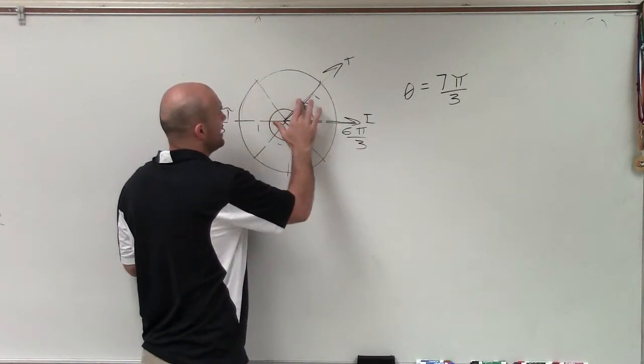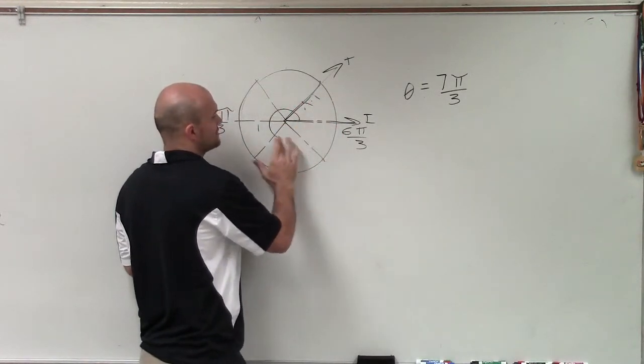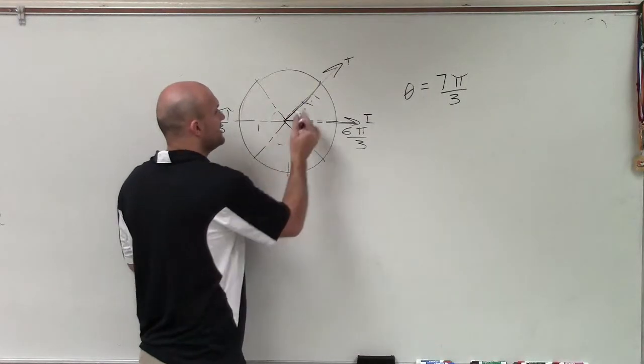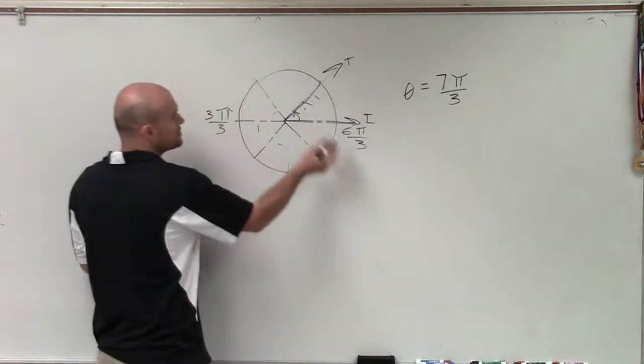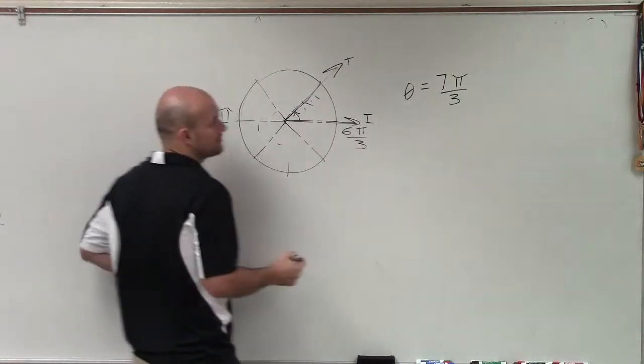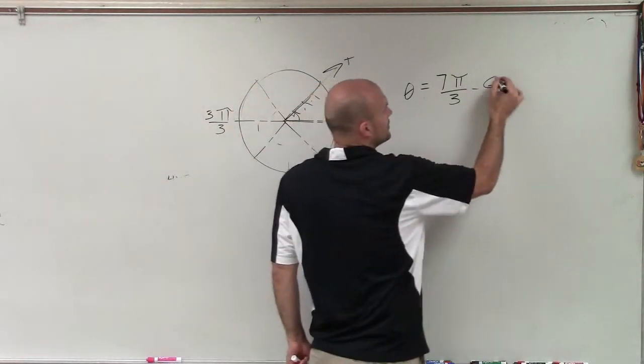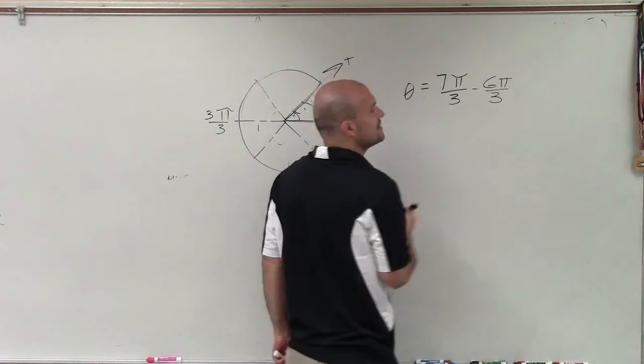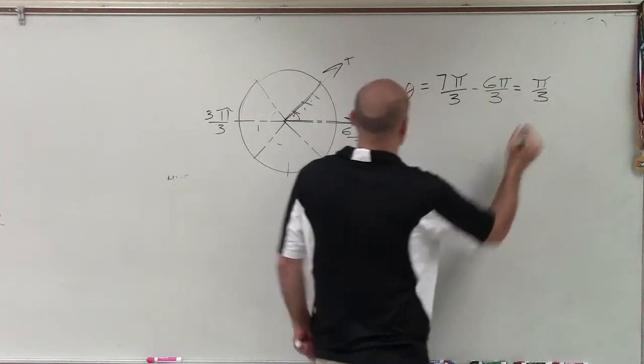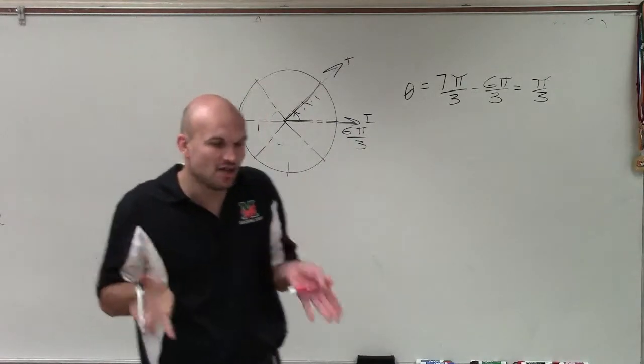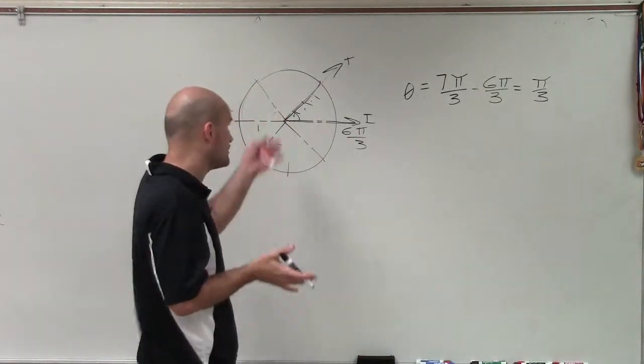Rather than adding 2π, what I'm going to want to do is subtract 2π, and when I subtract 2π, I'm just left with this one angle, which is π/3. Remember, 2π we can represent as 6π/3. So to find the coterminal angle, or at least the smallest positive, I'm going to subtract 2π. Therefore, that gives me π/3. So π/3 is the smallest positive coterminal angle.